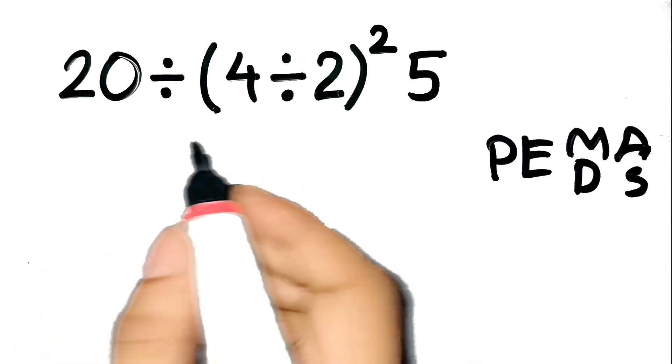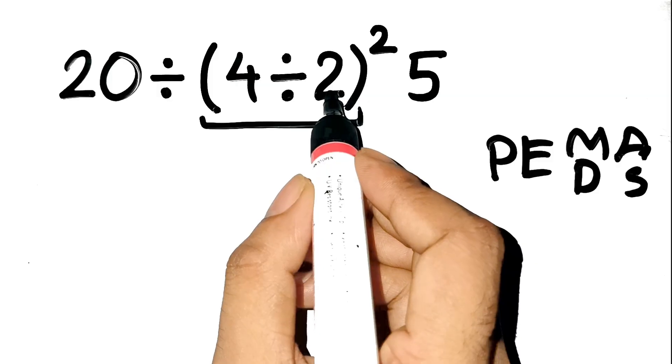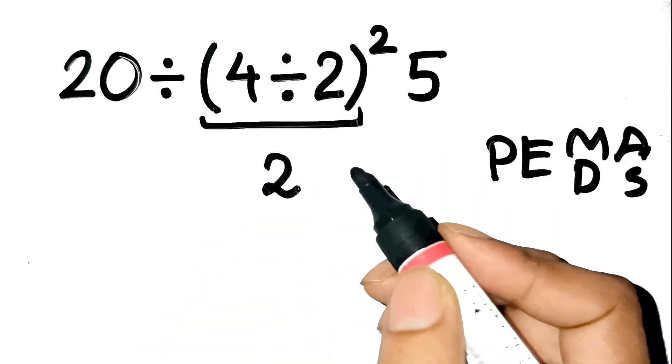So first, parentheses. Inside the parentheses, we have 4 divided by 2, which equals 2. Perfect.